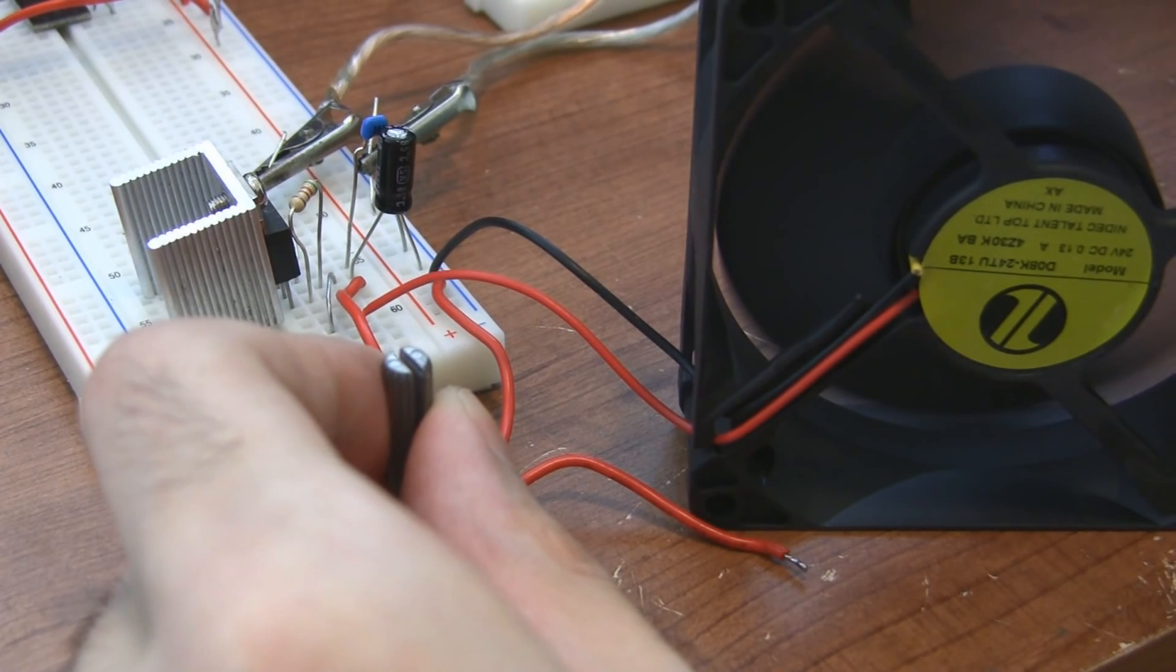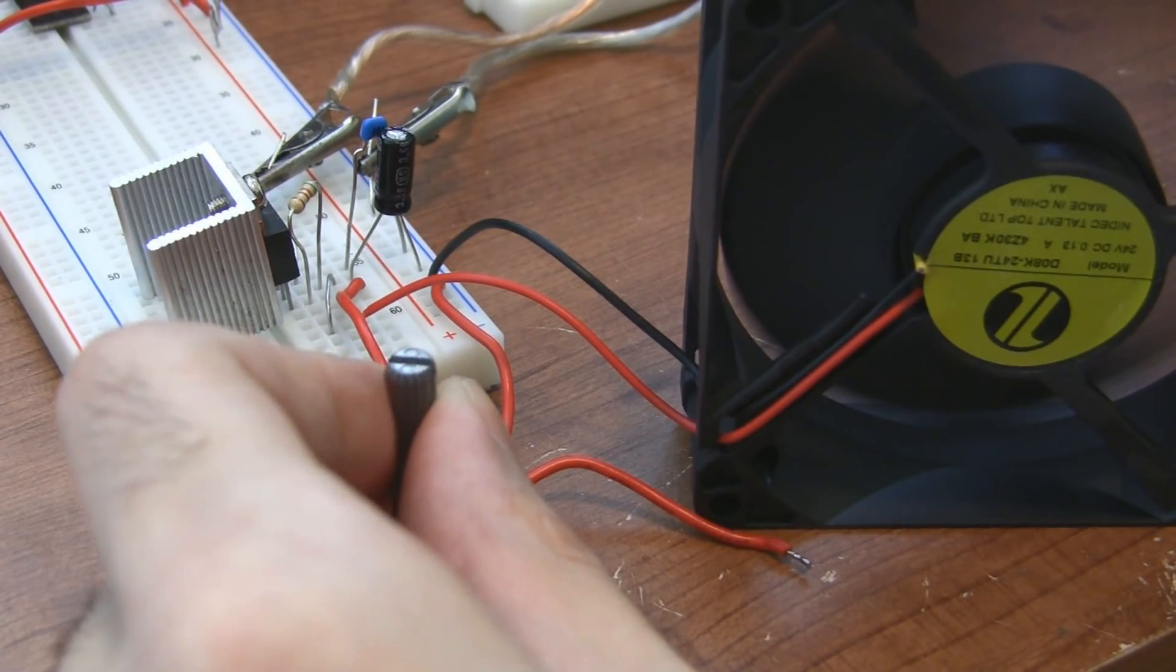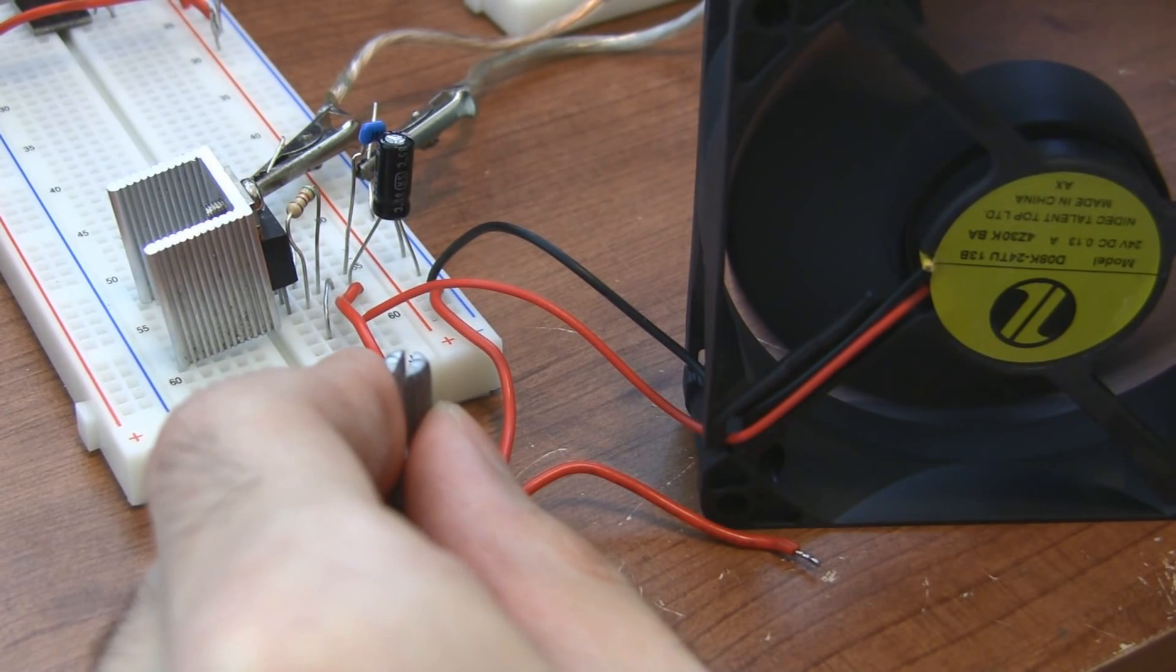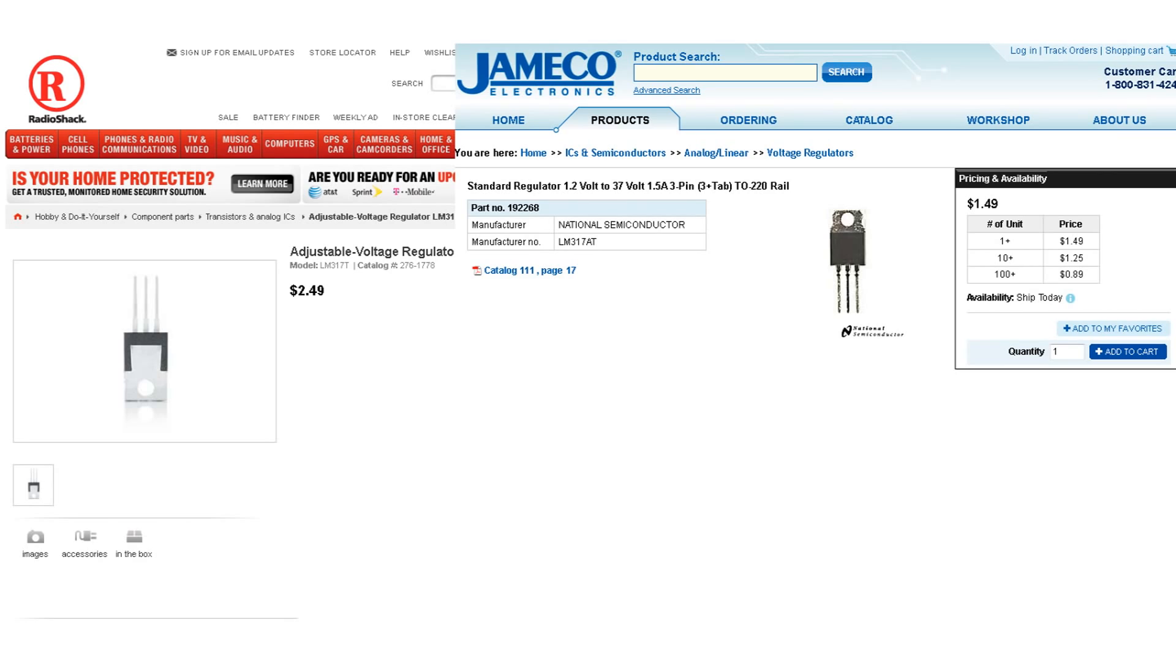You could use it as a power supply for a lot of projects such as a fan speed controller. You can get an LM317 from anywhere that sells electronics.